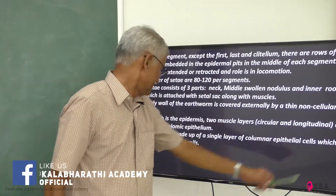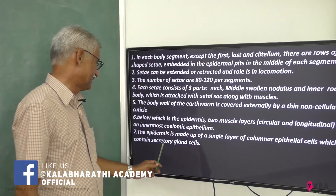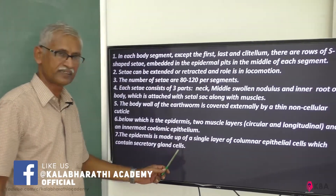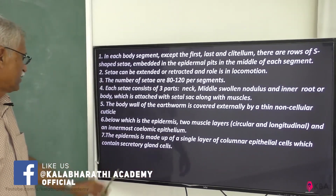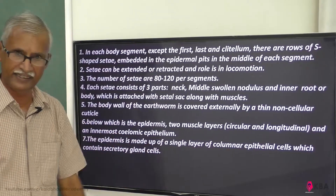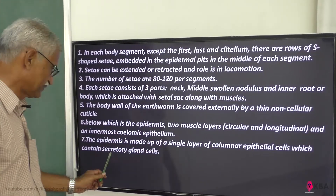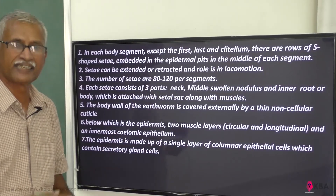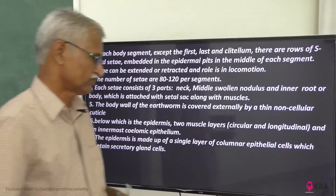The length-wise muscle layer, ring-wise muscle layer, and respiratory gland cells are present. The epidermal cells are of columnar epithelium variety, glandular type, and they secrete the cuticle.